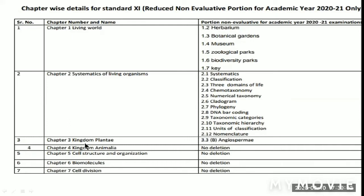Chapter 3, Kingdom Plantae. Kingdom Plantae has 3.3 Angiospermia — this is the point that has been reduced.